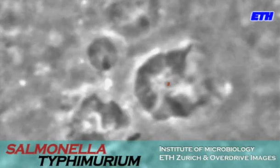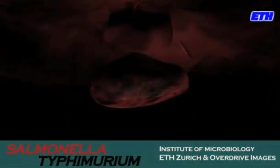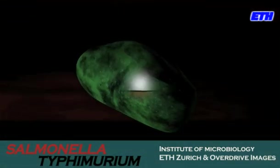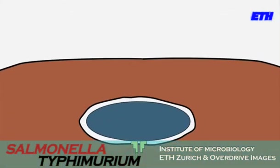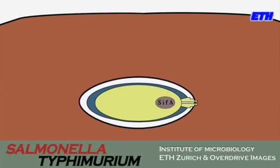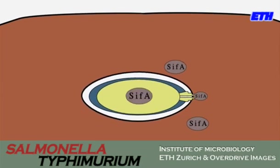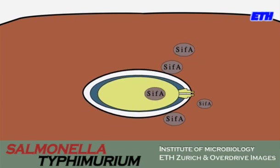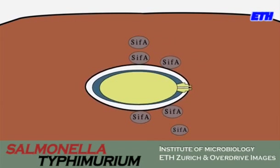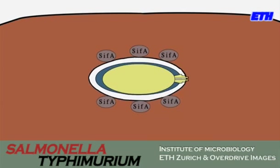Now begins the intracellular lifestyle of Salmonella Typhimurium, inside the vacuole that has been formed during the engulfment of the bacterium by the host cell membrane. A different type 3 secretion apparatus is assembled and starts to inject a different set of Salmonella effectors across the vacuolar membrane. Again, these effectors manipulate host functions — they alter the properties of the vacuole and trafficking processes in the host cell, so that the bacterium is protected inside its vacuole from host defenses.